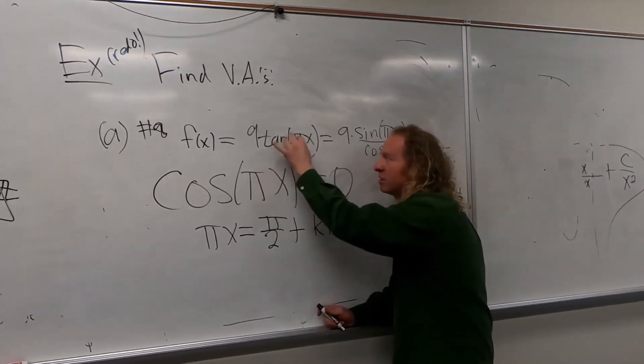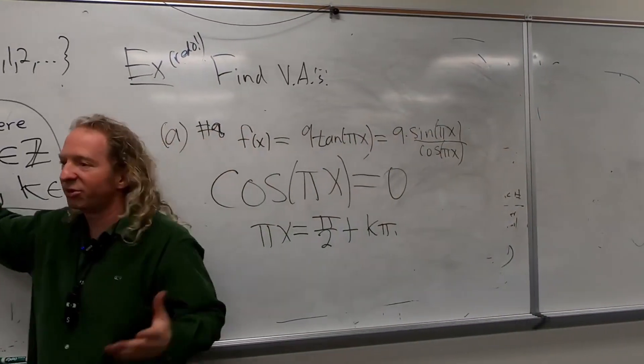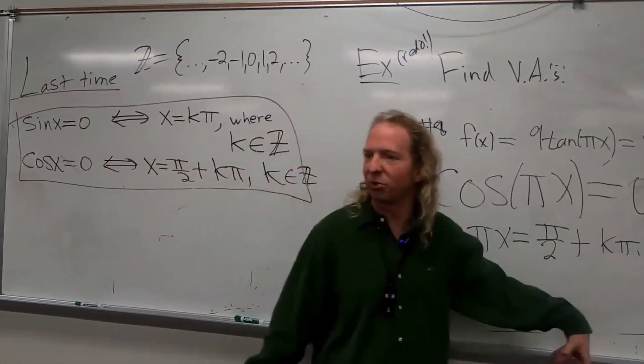Oh, cosine's on the bottom, so just take this and set it equal to that. If sine's on the bottom, you just set it equal to k pi. You don't have to show all this work.